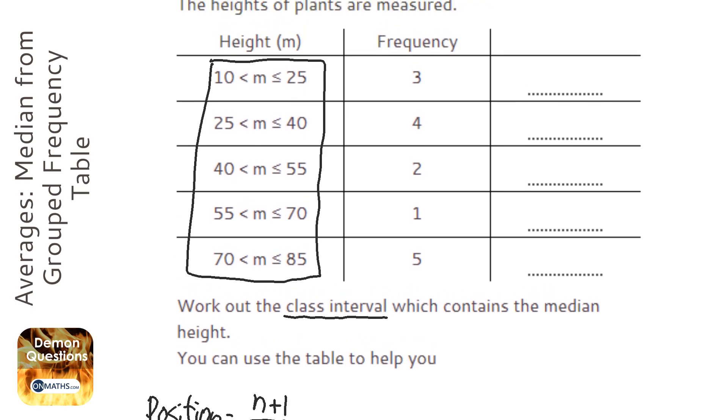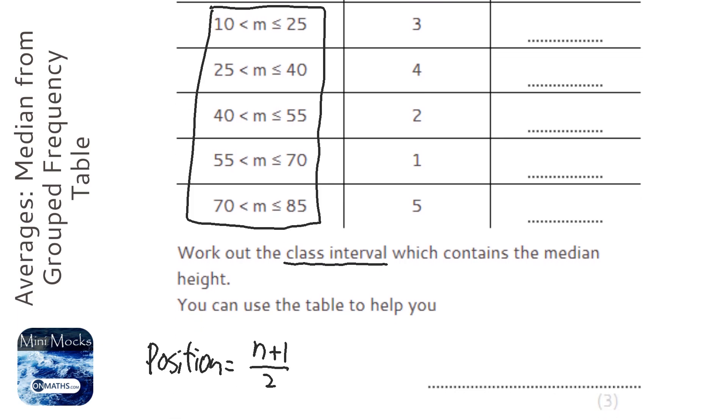So we need to work out how many values we have, so let's add them up. 3 plus 4 plus 2 plus 1 plus 5, and we've got 15 in total. So we're going to do 15 plus 1 over 2. 15 plus 1 is 16, 16 divided by 2 is 8. So we're looking for the eighth value.